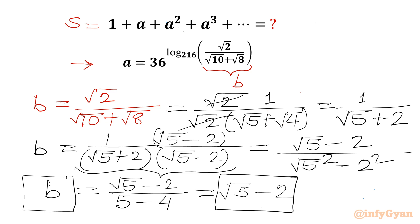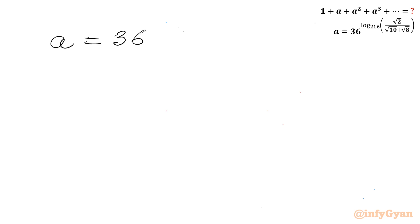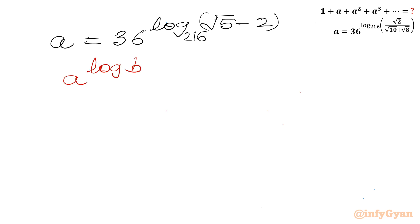Now we apply this value here. So a = 36 raised to the power log(√5 − 2) with base 216. Now I will use one log property: a^(log b) = b^(log a). So I will swap 36 and (√5 − 2), giving a = (√5 − 2)^(log 36 with base 216).